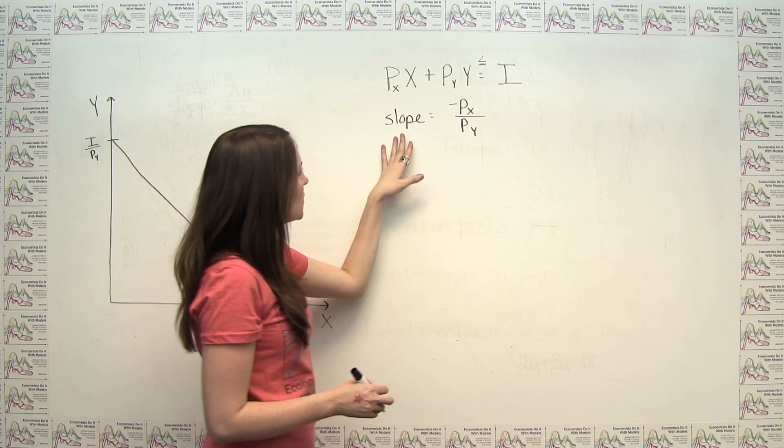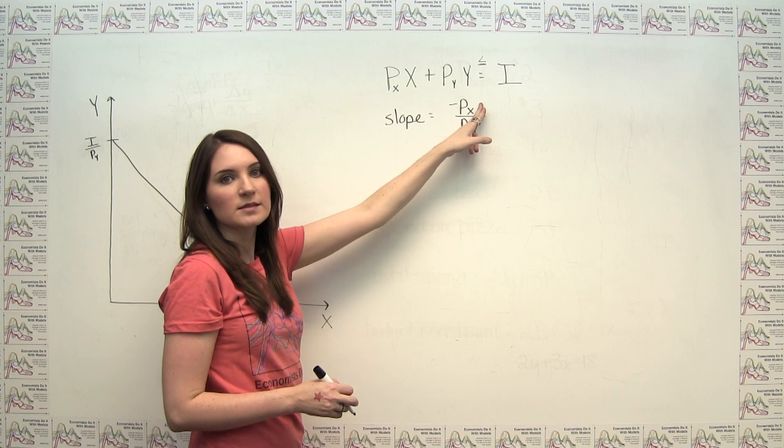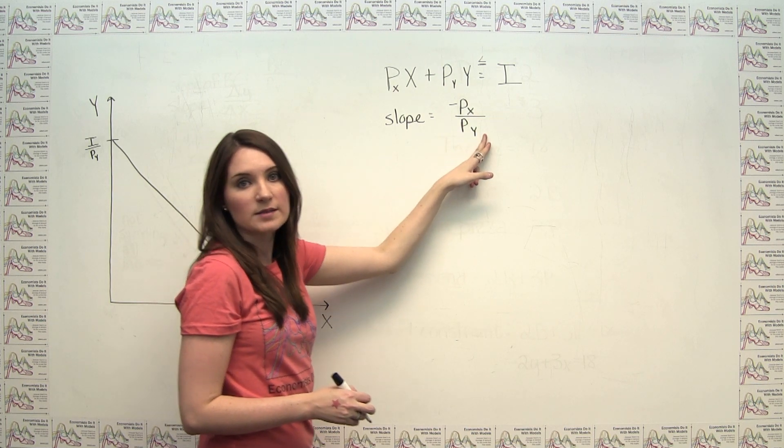And then we said that the slope of our budget constraint was just negative the price of the good on the x-axis divided by the price of the good on the y-axis.